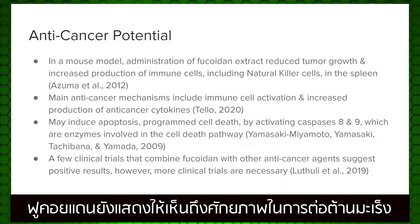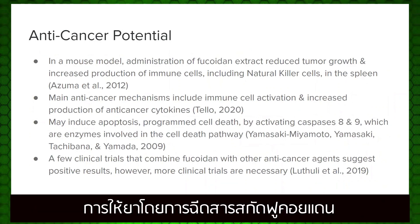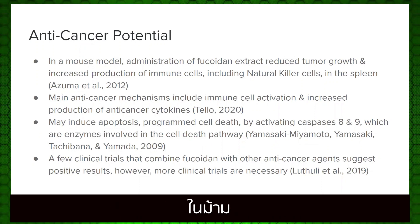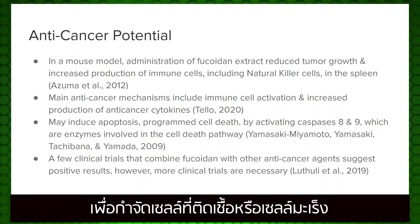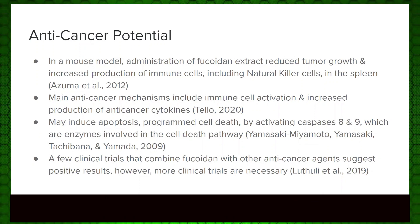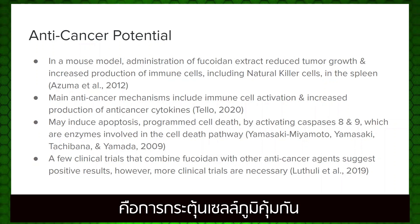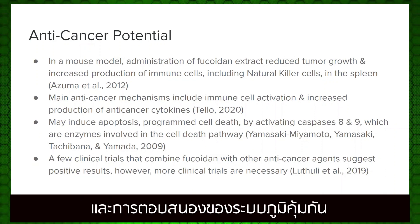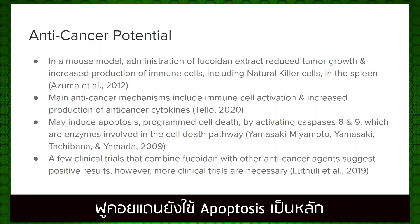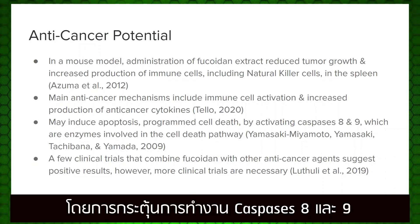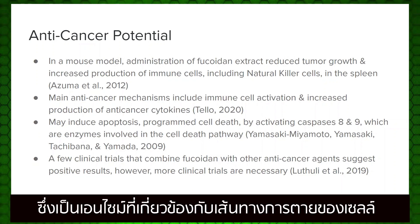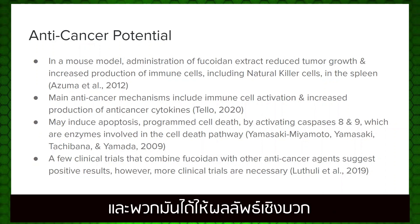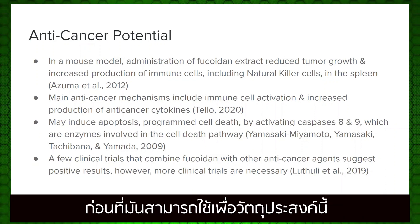Fucoidan has also shown anti-cancer potential. In a mouse model, administration of Fucoidan extract reduced tumor growth and increased production of immune cells, including natural killer cells, in the spleen. Natural killer cells act in the first line of defense in the immune system to remove infected or cancerous cells. The main anti-cancer mechanisms of Fucoidan are immune cell activation and increased production of anti-cancer cytokines, which are cell signaling molecules that aid in cell-to-cell communication and immune responses. Fucoidan may also induce apoptosis, or programmed cell death, by activating caspases 8 and 9, enzymes involved in the cell death pathway. A few clinical trials have combined Fucoidan with other anti-cancer agents and suggested positive results, however more clinical trials are necessary before it can be used for this purpose.